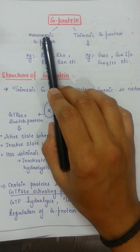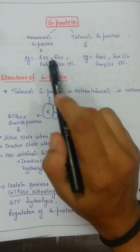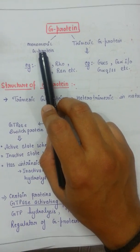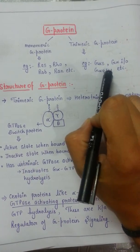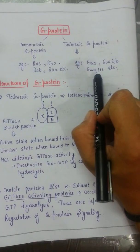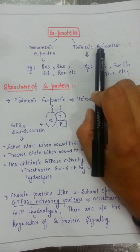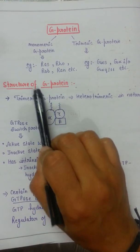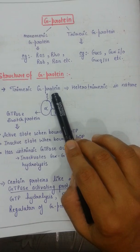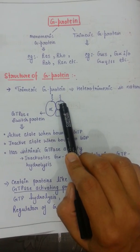In this video I am going to discuss the trimeric G-protein. When we discuss the tyrosine kinase pathway, I will cover the monomeric G-proteins — examples include Ras, Rho, Rab, and Ran. Examples of trimeric G-proteins include G-alpha-s, G-alpha-i/o, and G-alpha-q/11. So here I am going to focus on the trimeric G-protein.